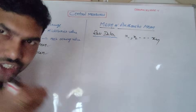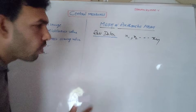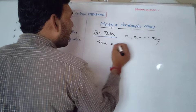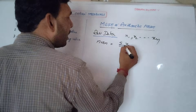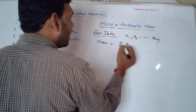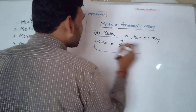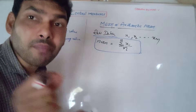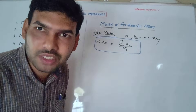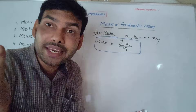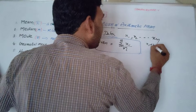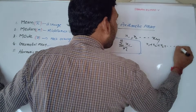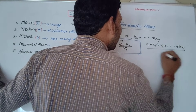For ungrouped data with values X1, X2, so on, Xn — for N items or N observations — arithmetic mean equals sigma Xi, i equal to 1 to N, divided by N. Simply put: sum of all items divided by the number of items. That is, X1 plus X2 plus X3 plus ... plus Xn, all divided by N.